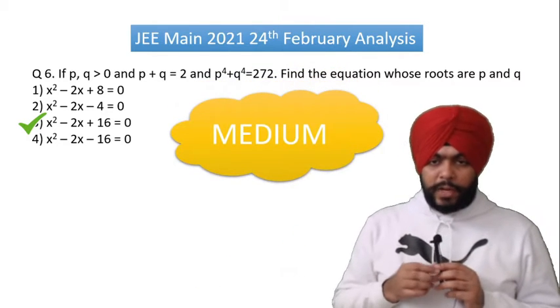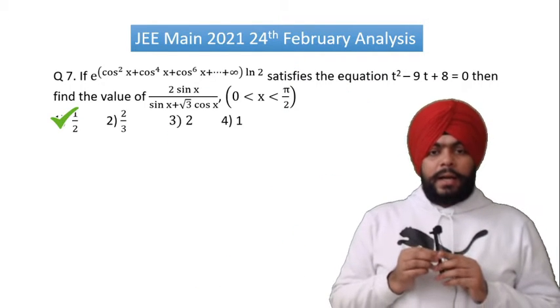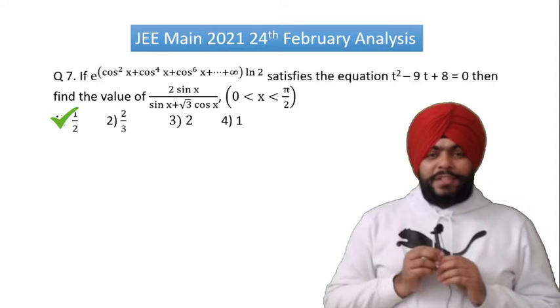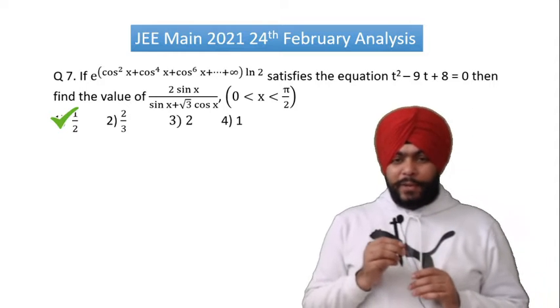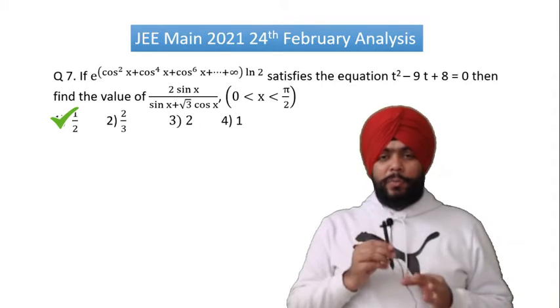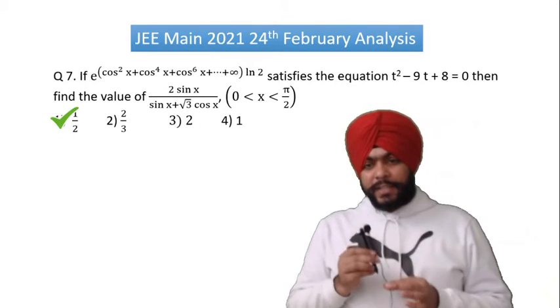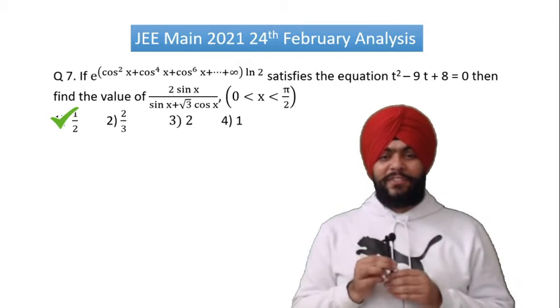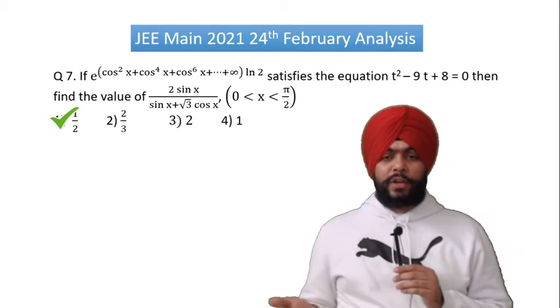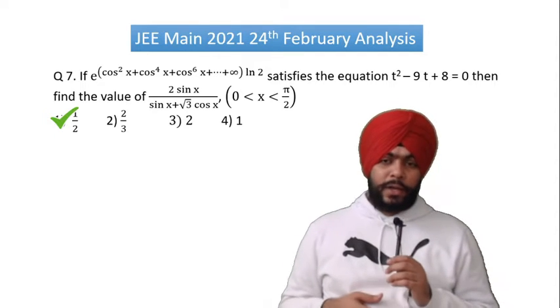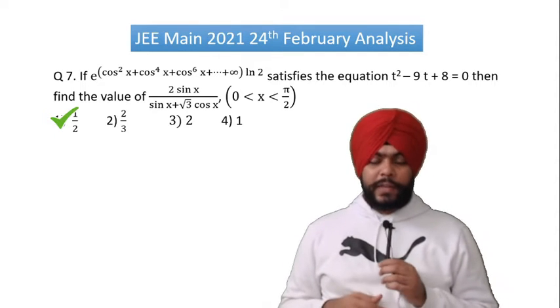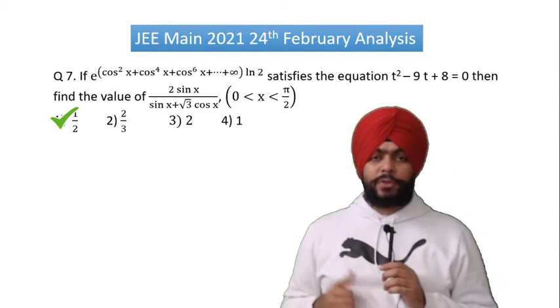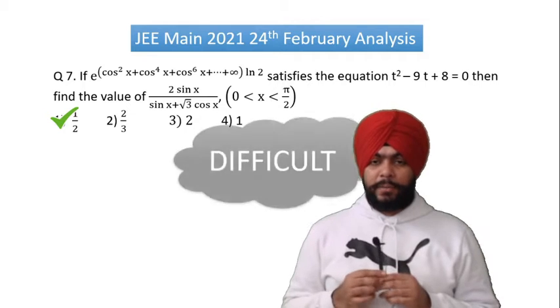Question number 7 is a notable question. First of all, a trigonometric infinite series was asked, and on top of that you have to solve quadratics and then trigonometry. So it is a very lengthy question. This is a difficult question.